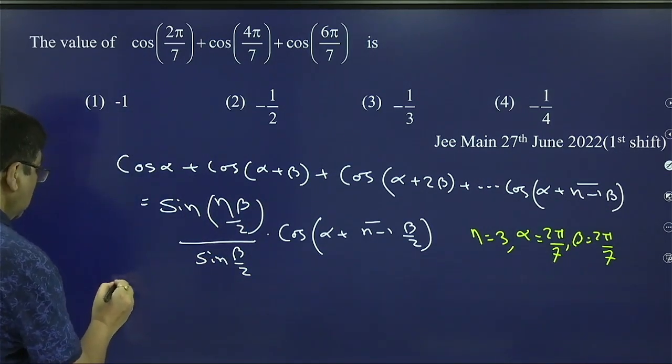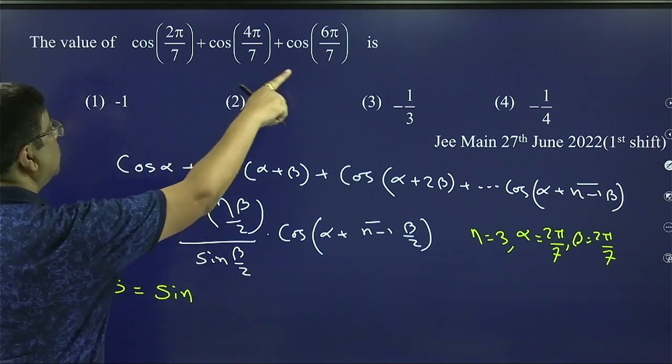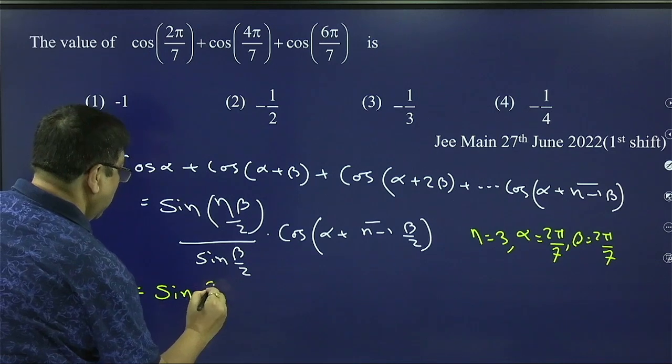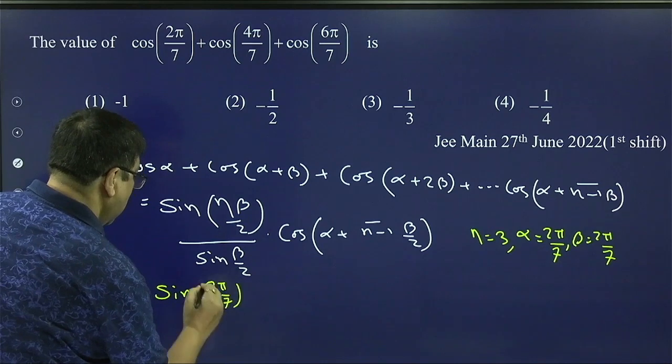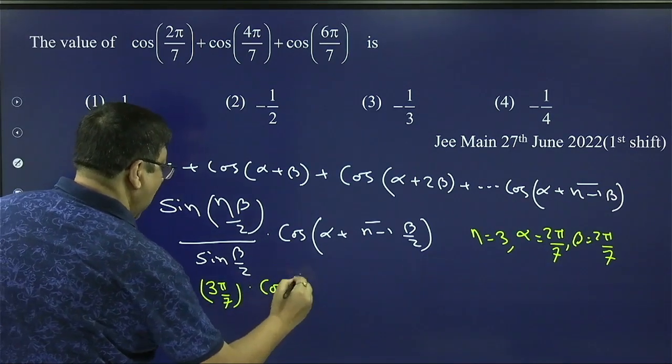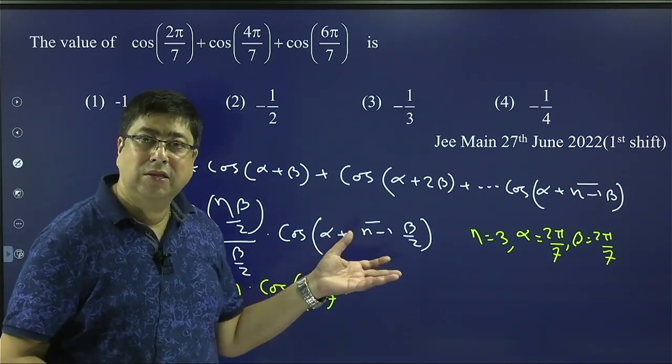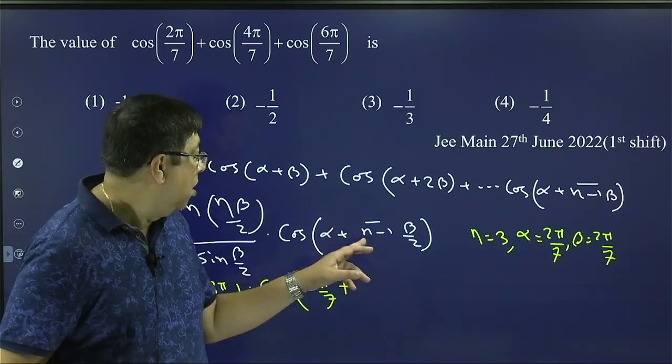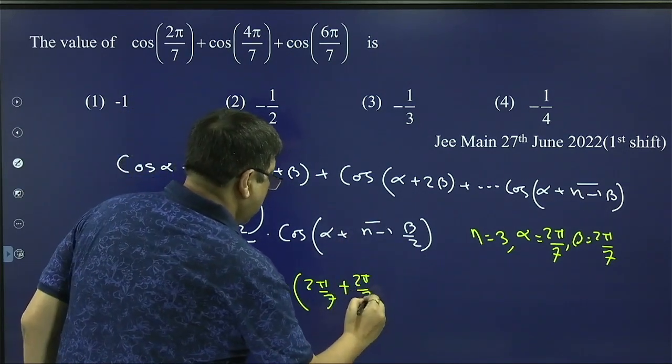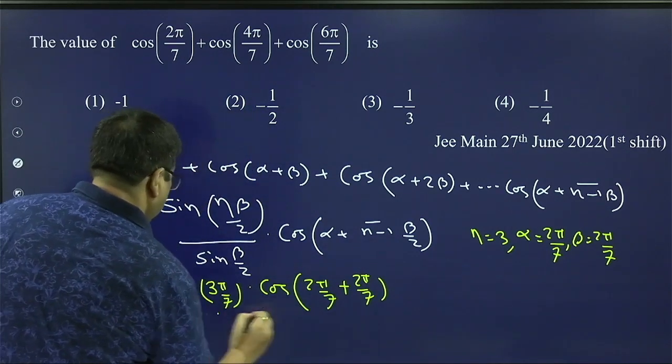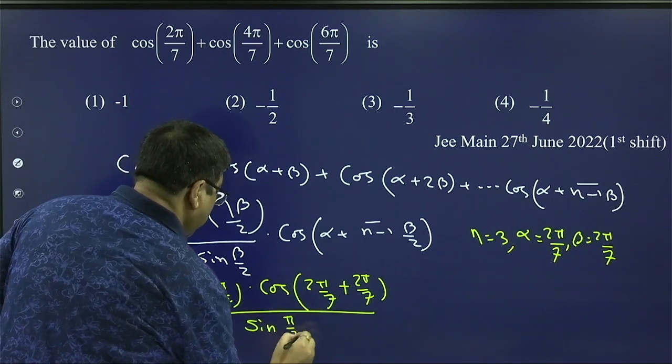So the series, suppose I am writing as S. Series equal to sin, n means three here. So three terms. So 3β/2, beta by 2. It means 3π/7 into cos(α 2π/7 + (n-1), n means 3, 3 terms. So n minus 1 is 2. 2, 2 by 2 cancel. That is β, 2π/7) divided by sin(β/2). It means π/7. So this series...